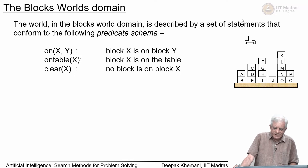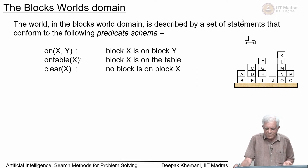There is a predicate called clear(x), which means that no block is on top of block x. If you look at the figure on the right, you can see that A is clear, C is clear, F is clear, J is clear — there is nothing on top of any of these.